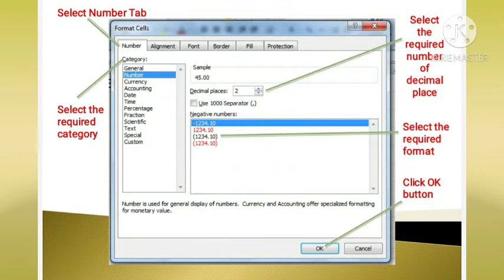In this image, we can see the format cell dialog box in which the number tab has been selected which is at the top left hand corner. After selecting the number tab, we have to select the required category which you can see in this image. Then, we will select the required number of decimal places which is shown on the right hand side. Then, select the required format. After that, we are going to click on ok button. All this, you can see in this image.